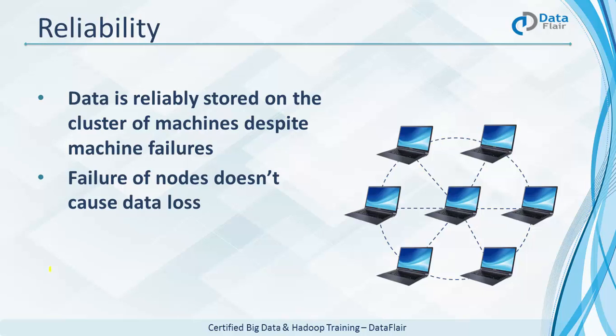Reliability is another very important principle. Because we're talking about data, your data must be stored reliably. Hadoop stores data reliably — even in case of machine failure, data is never lost. If two machines go down, no issue — your data is still safe in the system. This is achieved through something called replication, which we will discuss in subsequent sessions.